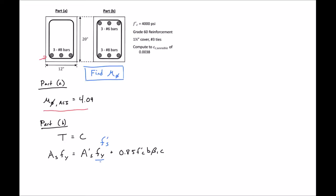So next we need to solve for C. When we solve for C, we'll get our C equal to AS Fy minus A prime F prime S over 0.85 F prime C B times beta 1. We can start plugging in our AS. We have 3 number 8 bars, 0.79 inches squared.